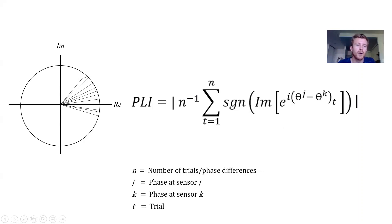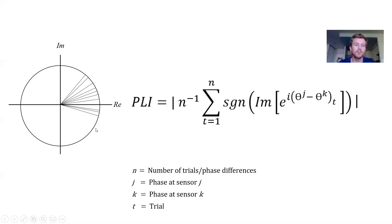We sum all those +1 and -1 values and take the mean. For example, seven trials with +1 and three with -1 gives seven minus three equals four; four divided by ten trials equals 0.4. The final step is to take the absolute value. So the phase lag index for channels J and K, represented by that set of phase lags, would be 0.4.